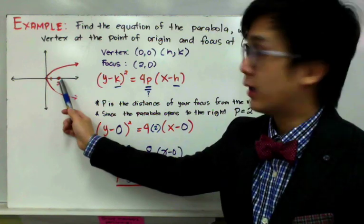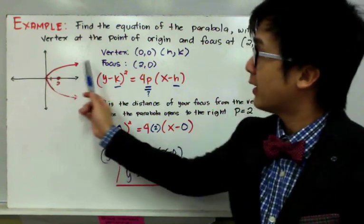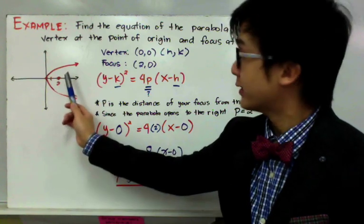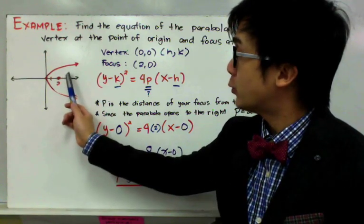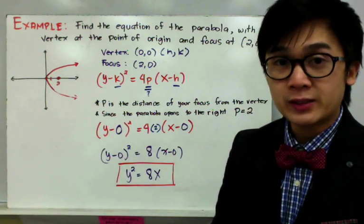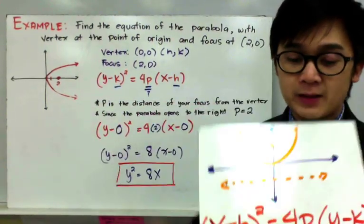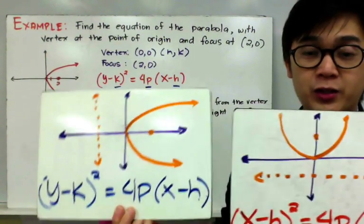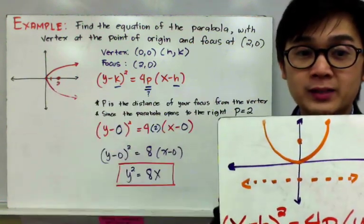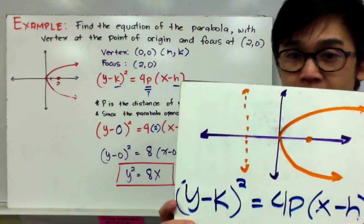You know that the parabola is opening to the right because you follow the direction of your focus — it basically envelops the parabola from the focus. The next thing to do is to pick the correct formula. We have two sets of formulas for the standard equation of a parabola. Since the parabola is opening sideways, we pick the equation: (y − k)² = 4p(x − h).